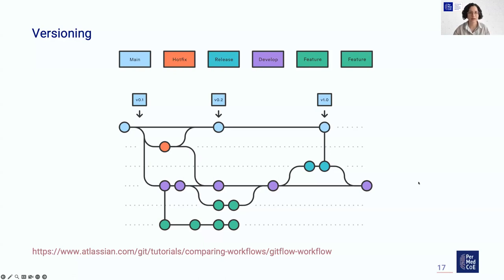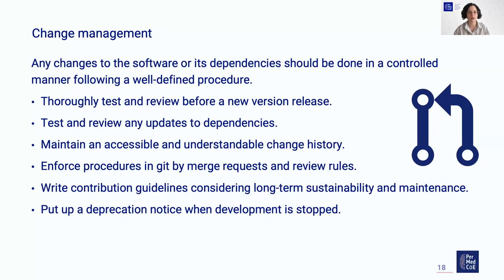Many of these best practices overlap. Change management is something that should also be done — any changes to the software or its dependencies should be done in a controlled manner following a well-defined procedure. You should always test and review the code before a new version release, and also test and review updates to dependencies. It is good to maintain an accessible and understandable change history. You should also write contribution guidelines so other people can contribute, which increases long-term sustainability and maintenance. When you stop development, put up a deprecation notice.